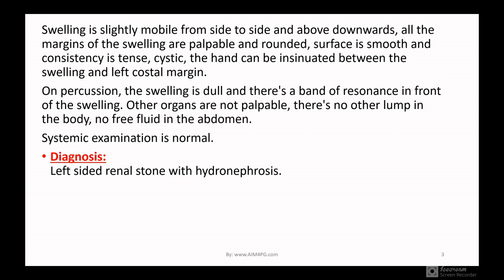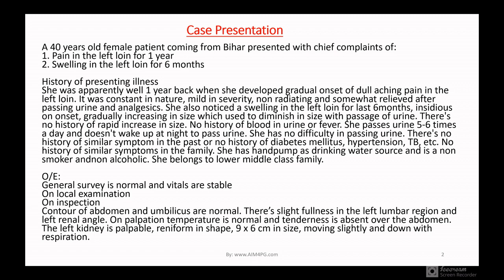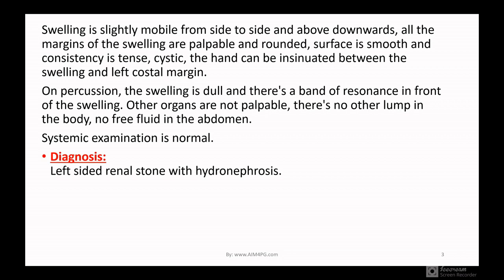The swelling is slightly mobile from side to side and above downwards. All margins of the swelling are palpable and rounded, the surface is smooth, consistency is tense cystic, and the hand can be insinuated between the swelling and the left costal margin. On percussion, the swelling is dull and there is a band of resonance in front of the swelling. Other organs are not palpable, no lump in the body, no free fluid in the abdomen, and systemic examination is normal. So we can tell the diagnosis is left-sided hydronephrosis.